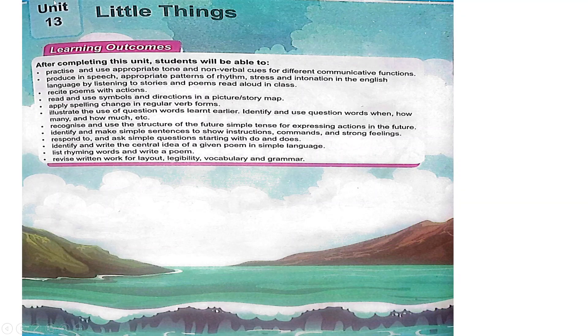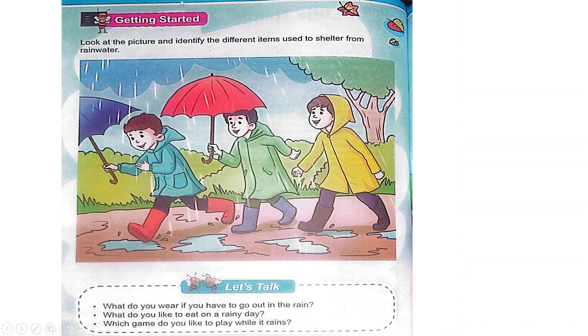Unit 13, Little Things. Getting started — look at the picture and identify the different items used to shelter from rainwater.